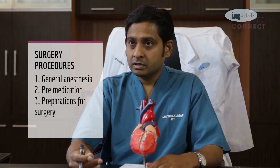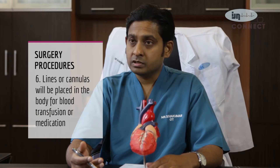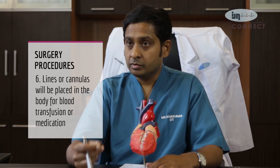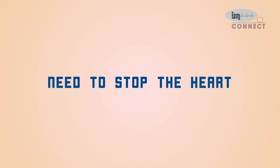Ventricular septal defect closure is done with the support of a cardiopulmonary bypass machine. The surgery is performed under general anesthesia with pre-medication. The patient is fasted overnight and on the day of surgery is placed under anesthesia. The anesthetist inserts lines or cannulas into the body for blood transfusion and medications. The surgery is done by opening the breastbone. Once the breastbone is opened, the pericardium — the covering around the heart — is opened to expose the heart.